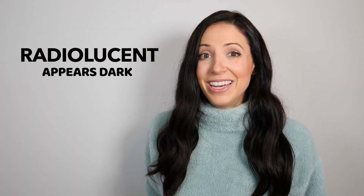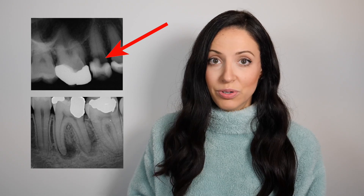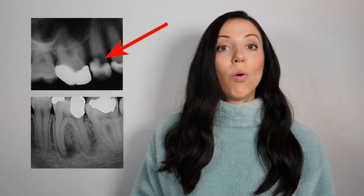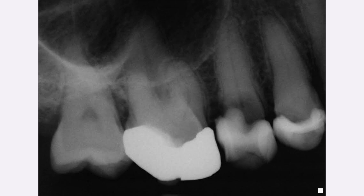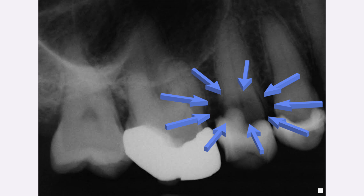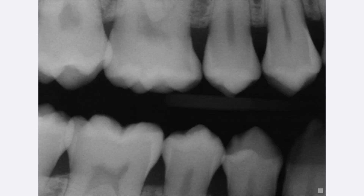But if your dentist or dental hygienist is talking about something that is abnormal — let's start with radiolucency — then it's most likely a cavity, also known as decay, or an infection. Here is an example of a radiolucency of a super bombed-out tooth. This tooth has so much decay it might be able to be saved through a root canal, but honestly this one might need to be extracted.